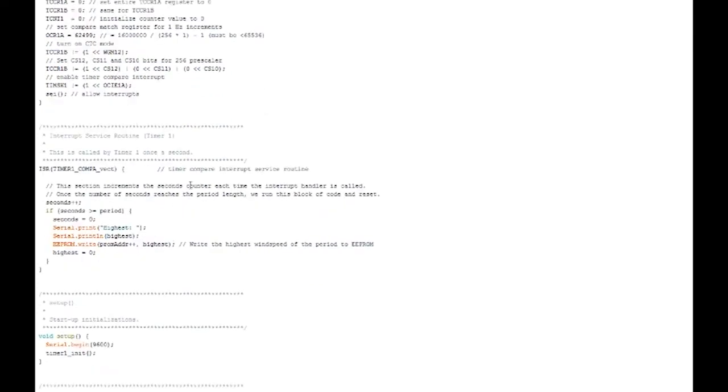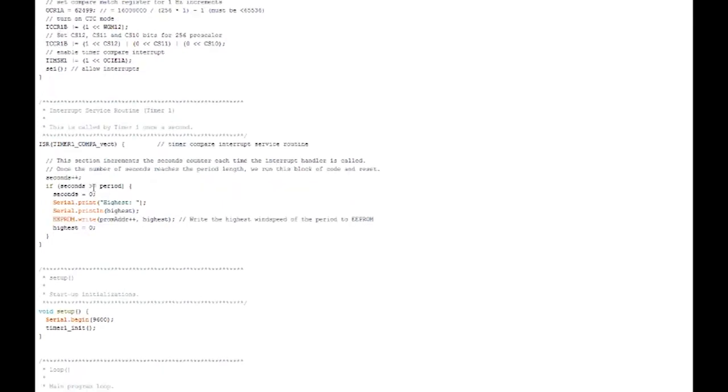I use that little calculator website to come up with it. And what this does is this tells the timer to fire once a second. When the timer fires once a second, it comes down here and it calls this function. This is called the interrupt vector. This gets called every second. And basically what it does is it checks to see, hey, is this number of seconds past the period? So in other words, has it been five minutes? If so, go ahead and store that highest value, which we're going to see down below. It also prints it out so you can test it in the serial monitor. But EEPROM write stores whatever the highest value was in EEPROM memory.